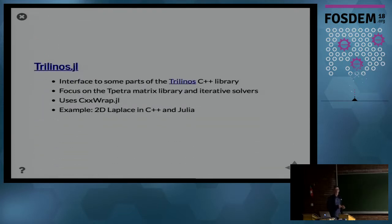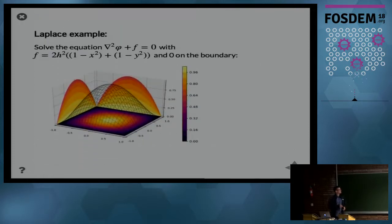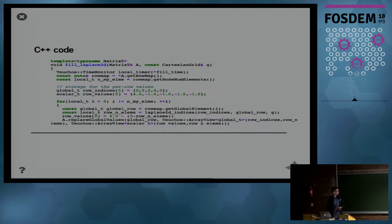So the Trilinos library—who here is familiar with the Trilinos library? Not that many, okay. Basically, it's a library that allows you to solve large linear systems on a compute cluster. The example that we will use here is the 2D Laplace equation. You solve this differential equation on a grid of, in this case, 1000 by 1000 nodes, and you will get this kind of 2D parabolic surface as a result. It's just a benchmarking problem.